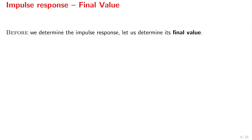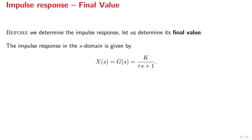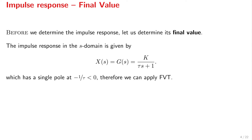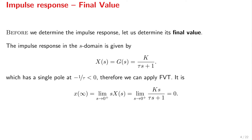Let's start by discussing the impulse response of first-order systems. Before we derive the impulse response itself, we can find its final and initial values. The impulse response in the S domain is given simply by the transfer function of the system, which is K over tau s plus 1. We can use the final value theorem here, because the only pole of this function is minus 1 over tau — a negative pole. According to the theorem, the final value x at infinity equals the limit as s goes to 0-plus of s times X(s), and substituting gives a final value of 0.